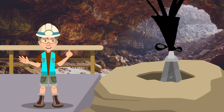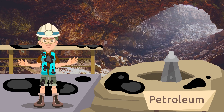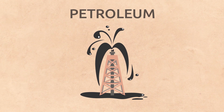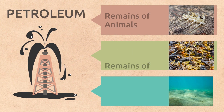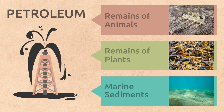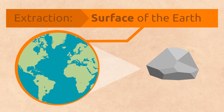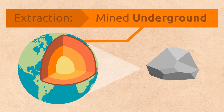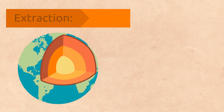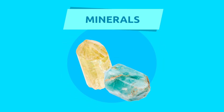Did you know that petroleum, even though it's liquid, is a rock too? Petroleum is formed from the remains of living things like animals and plants, and from sediment deposits found in marine beds. Rocks are extracted from the surface of the earth in quarries, or they are mined underground.